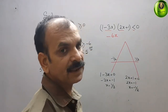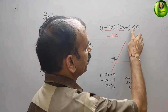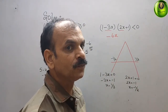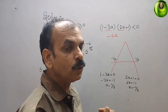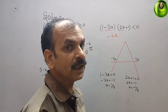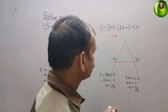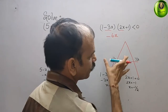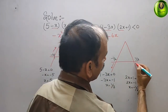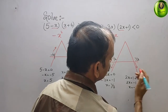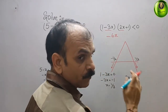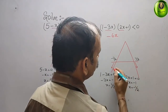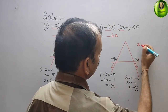Now we check the inequality sign — it is less than 0 — that means we have to move toward the negative side. We know the negative region is the downward part of the parabola. So we move downward in this direction.